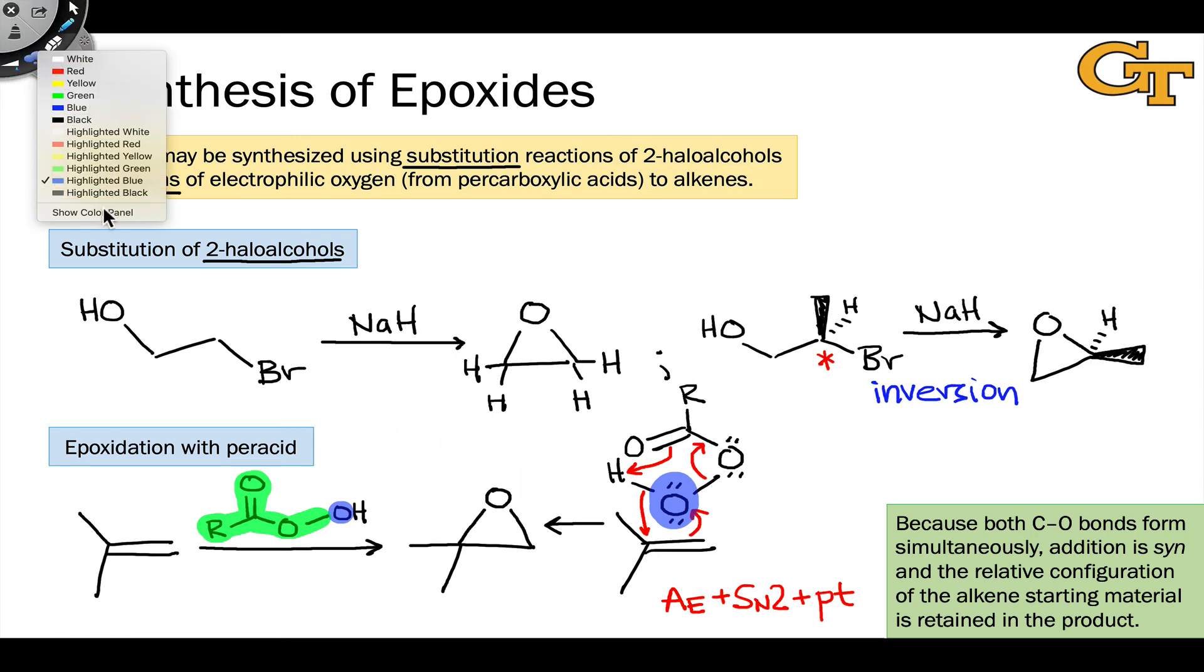The important curved arrows here, the things to really pay attention to are this donation of electron density from the alkene to the electrophilic oxygen, and the cleavage of this O-O bond. This electron flow I've highlighted in purple gives you the essence of the process from an electronic point of view.